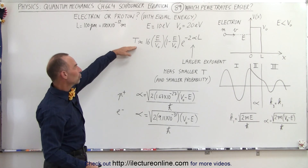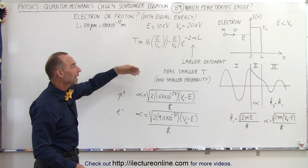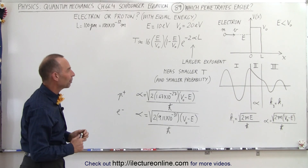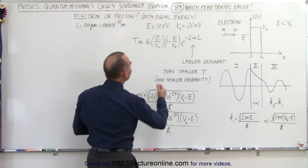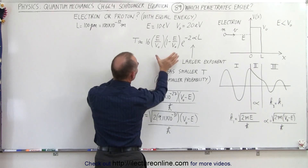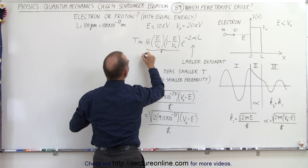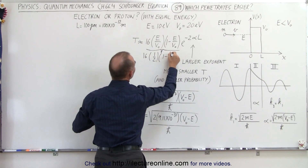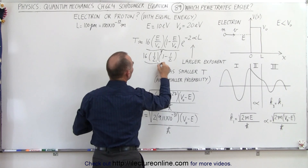Here's the transmission coefficient in a more simplified version, presuming that alpha is much greater than 1, which will be the case in this example. Notice if E over V is a factor of 1/2, we calculate what this is equal to for our example: 16 times 1/2 times (1 minus 1/2), which is also 1/2, so 1/2 times 1/2 times 16 equals 4.